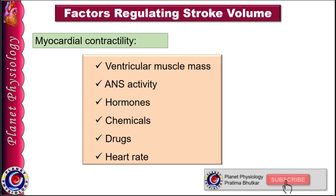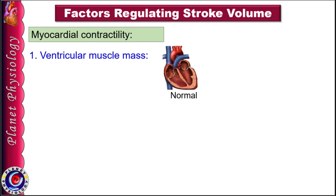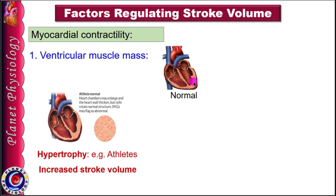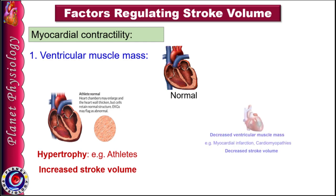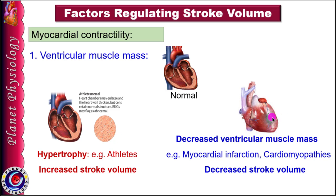Myocardial contractility is determined by ventricular muscle mass, state of autonomic activity, various hormones and chemical concentrations in the blood, drugs, and heart rate. More the muscle mass, more is the force of contraction and stroke volume. Regular physical exercise or athletic training leads to ventricular hypertrophy, increasing stroke volume, allowing athletes to exercise for longer duration than untrained persons. In myocardial infarction or cardiomyopathies, ventricular muscle mass is reduced, decreasing stroke volume and cardiac output.